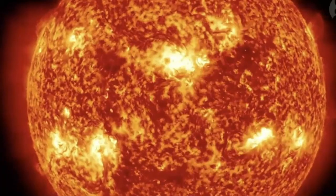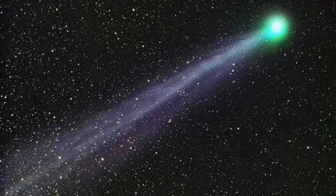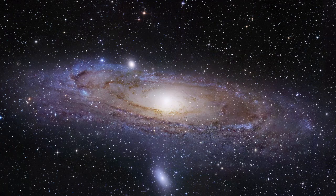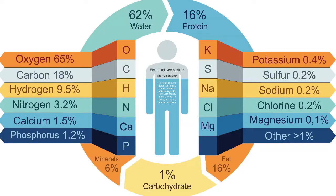Carbon is abundant in the sun, the stars, comets, and in the atmospheres of most planets. It's the fourth most abundant element in the universe by mass, the 14th most abundant element on earth, and the second most abundant element in your body. We find carbon in different structural forms, which we call allotropes.